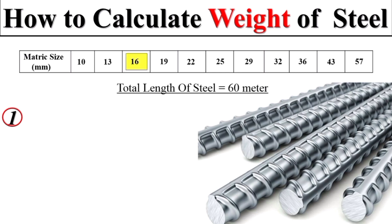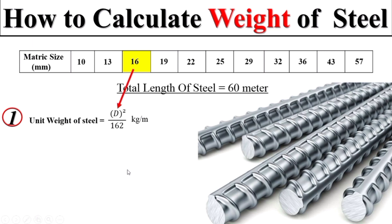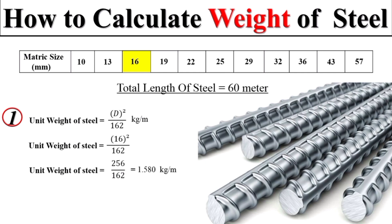Let's start with Case 1, selecting a metric diameter of 16 mm. To calculate the weight of a 16 mm diameter bar of total length 60 meters, we first calculate the unit weight of the 16 mm diameter. The formula for unit weight is D squared divided by 162. We substitute D as 16, giving us the unit weight of the 16 mm diameter — meaning a 1-meter bar of 16 mm diameter weighs 1.580 kg.